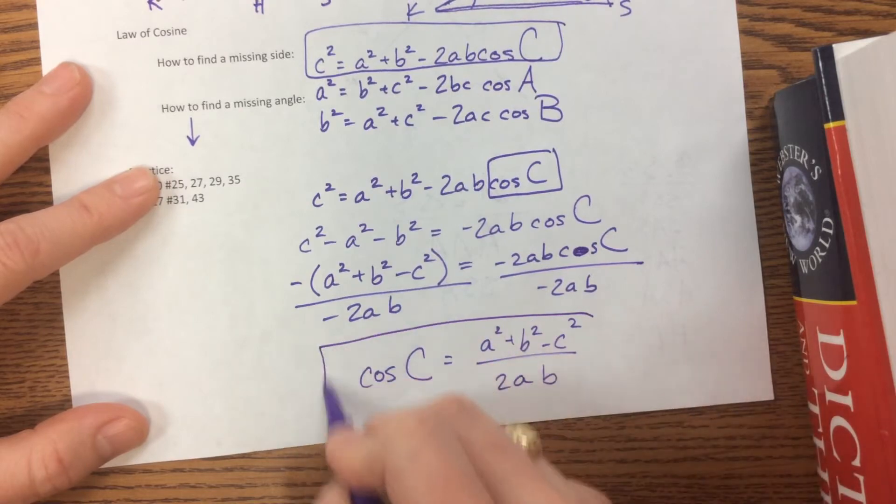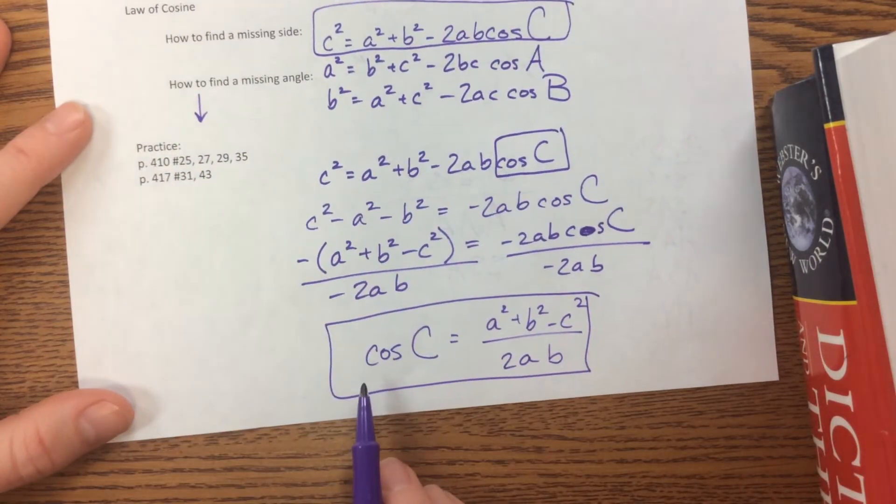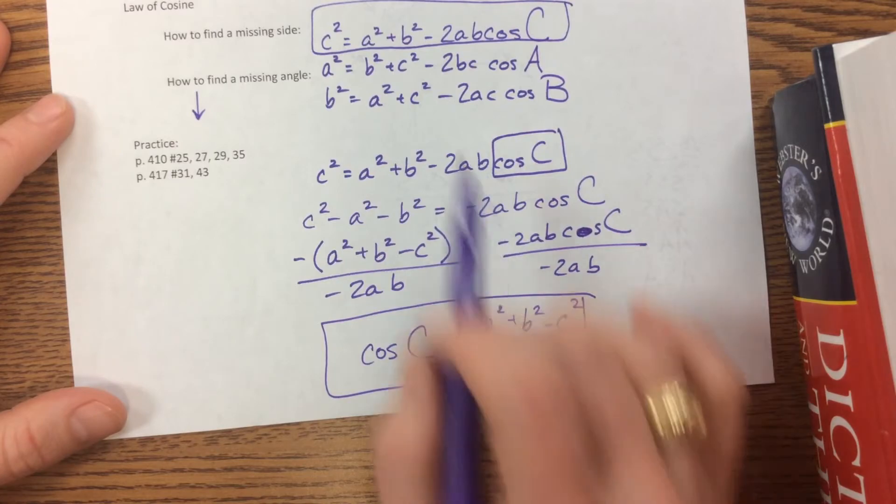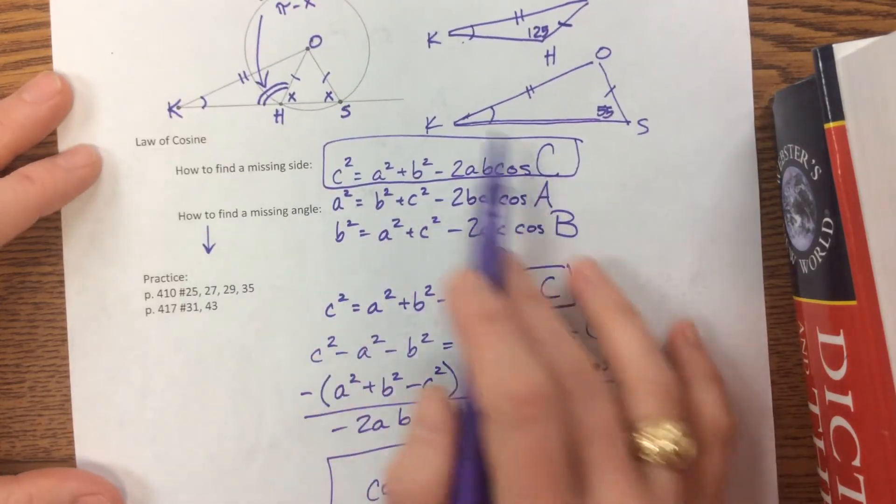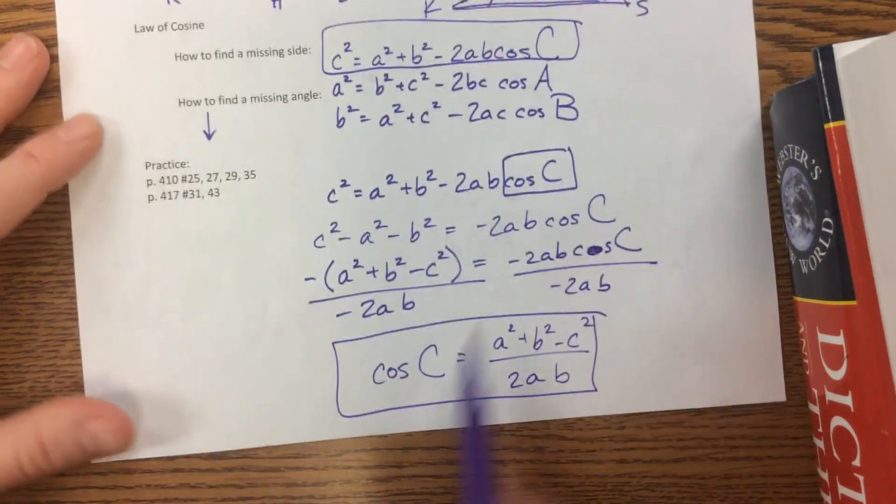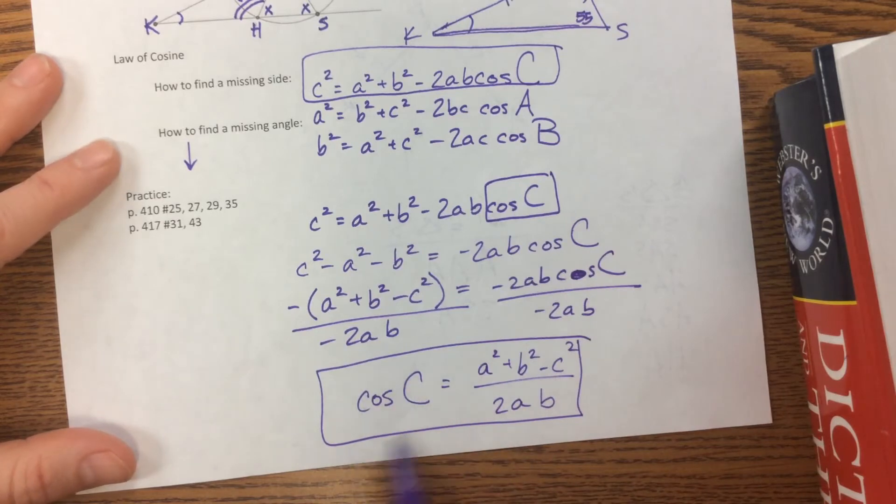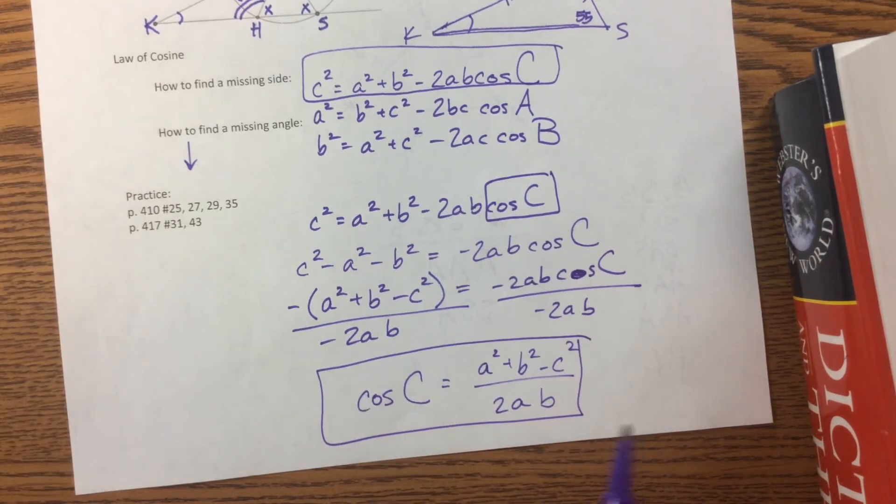And this formula here is really helpful to find a missing angle. So you can use the other one and manipulate and solve for c, but this one's all solved for big C. This one's already solved for cosine of c, and life just gets a little bit easier.